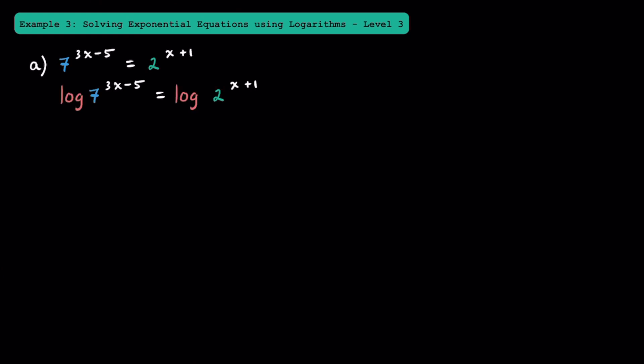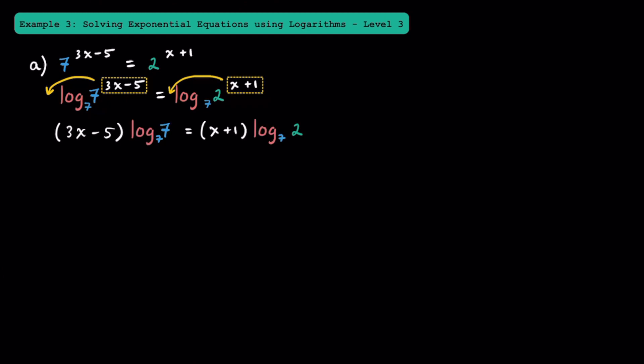Let's start by taking log of both sides. While you can choose any base, I'm going to choose to take log base 7 of both sides. For this particular equation, it makes sense to use either base 7 or base 2 because those are the bases of the powers. Now that we have logarithms, 3x minus 5 can come in front, and x plus 1 can also come in front. We'll have the quantity of 3x minus 5 times log base 7 of 7 is equal to the quantity of x plus 1 times log base 7 of 2. Log base 7 of 7 is just equal to 1, so we simplify the left side to the quantity of 3x minus 5 times 1.